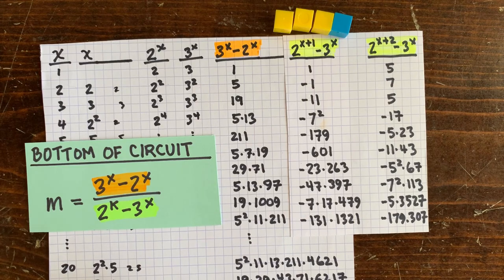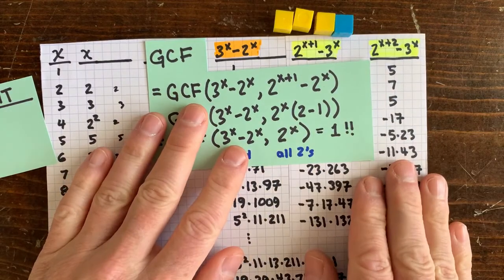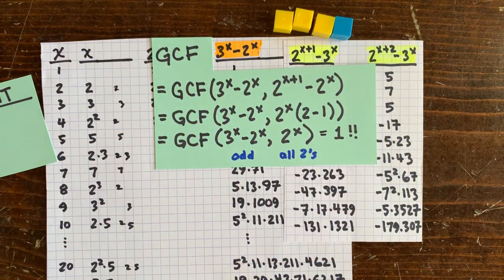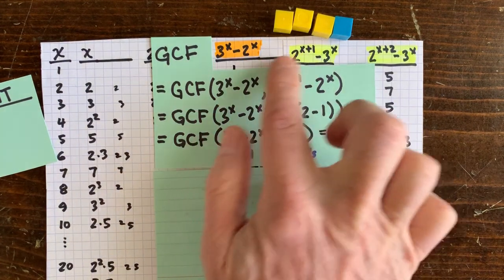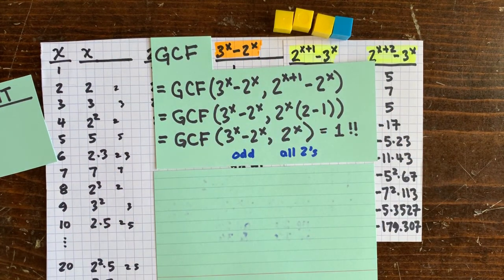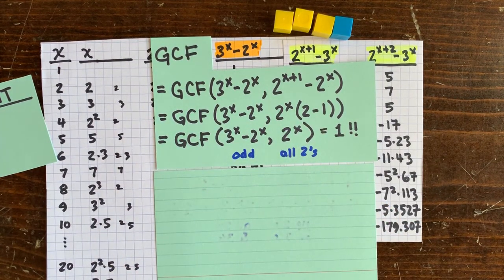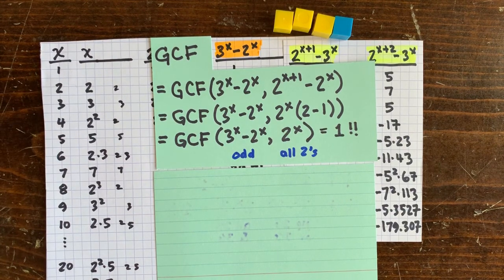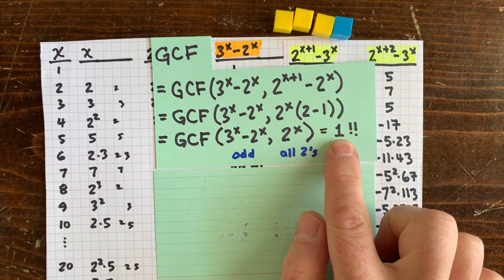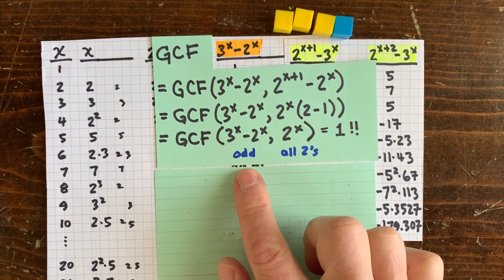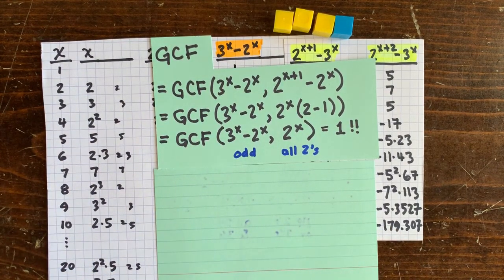And we can prove it using greatest common factors. So we're trying to find the greatest common factors between these two things. And we know that we can sum these together. And that leaves 2 to the x times 2 minus 1. So we know that this last greatest common factor is just 1, because the second term only has 2s as factors. And the first term is odd, so it doesn't have any 2s as factors.